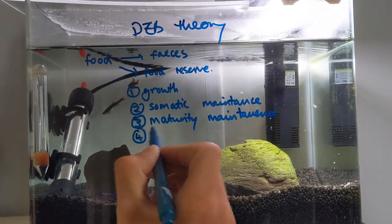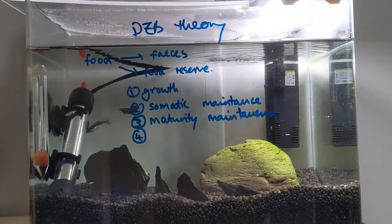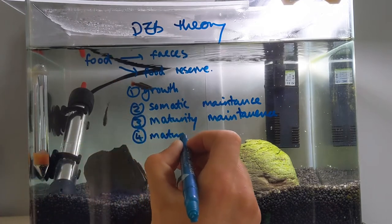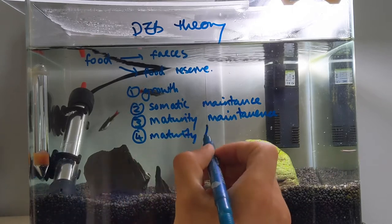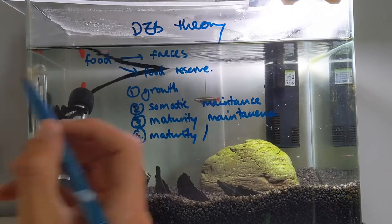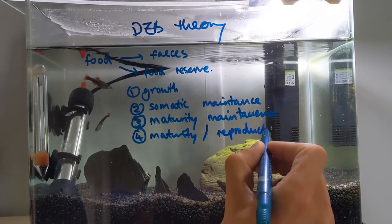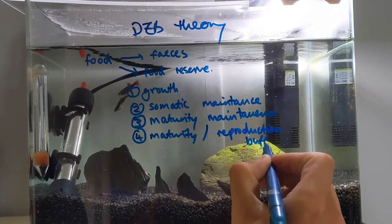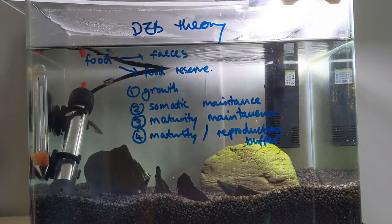Finally, this point depends on how mature the individual is. In the case of juveniles, this food reserve will go into maturity — so, becoming more mature. In the case of adult females, it will go into a reproduction buffer. This means that in the instance an individual reproduces, there's an extra store of energy to deal with the additional energy demands.